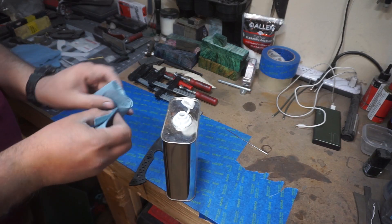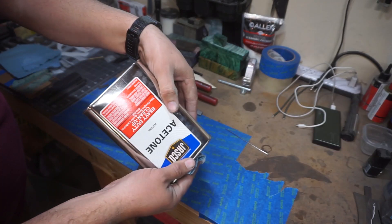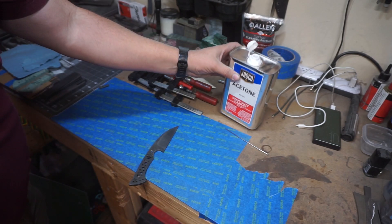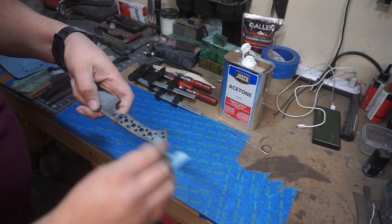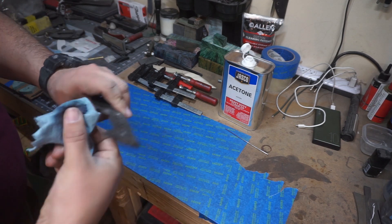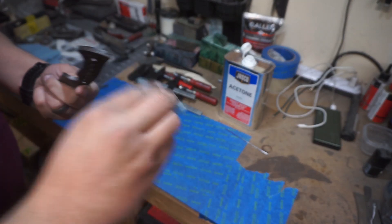Now we need to get everything cleaned up because we want to make sure we have a good mechanical bond with this epoxy. So I take acetone and I wipe everything down that is going to be glued together with this whole entire handle setup.